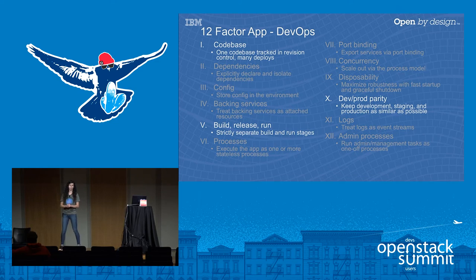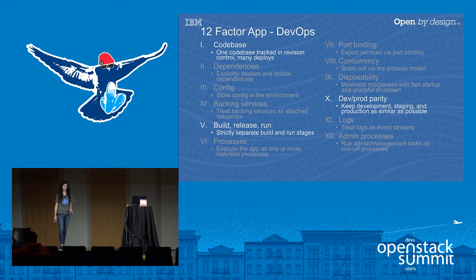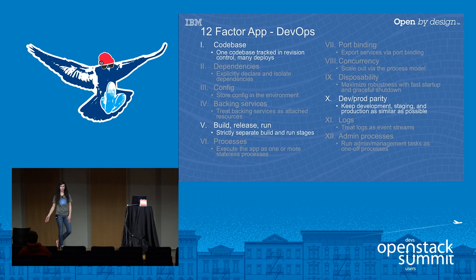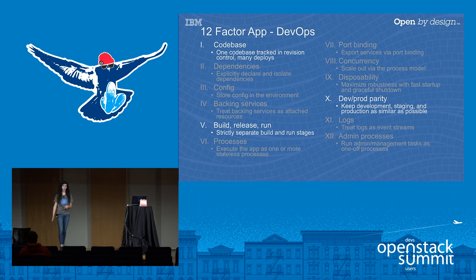All through the day we've been talking about the 12-factor app, and as far as DevOps is concerned, three of the sections apply. The code base — where you have a single code base, all your revisions are there, and you make many deployments from it. You also have build/release/run, where you have all your separate stages and the build and run stages are kept separate. And then you have dev/prod parity — the idea that you want each of your development environments to be as similar as possible.